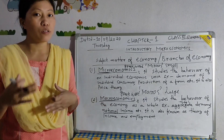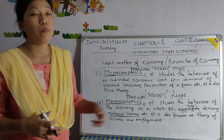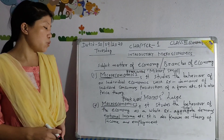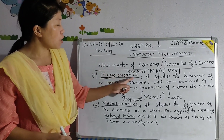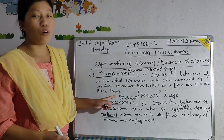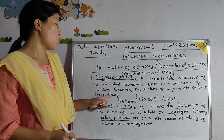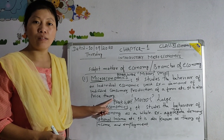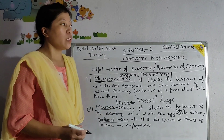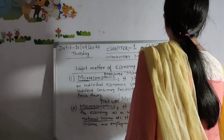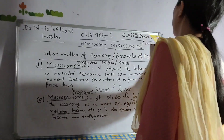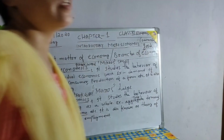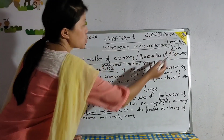If we are studying about the national income of the country, then it becomes macroeconomics theory. Macroeconomics is also known as the theory of income and employment. Microeconomics is also known as the theory of price, or price theory. Why is it called price theory? Because it mainly deals with the price of commodities and factors. Commodities in economics means goods — these two words are synonyms.